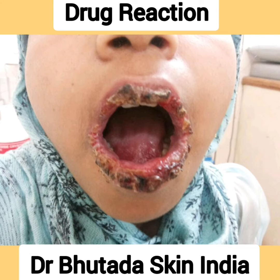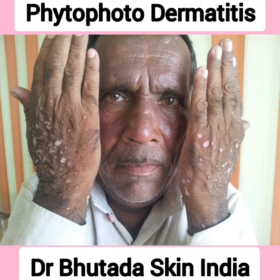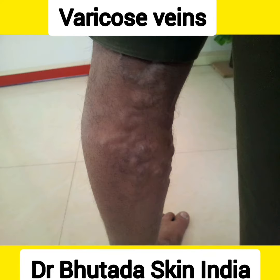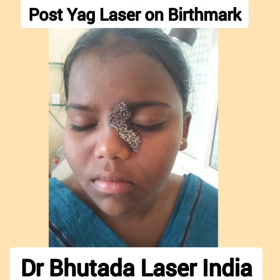This is the patient of drug reaction — you can see the oral cavity is involved. This is a patient of vitiligo — white patches. This is a patient of phytophotodermatitis on the face. This is a patient of varicose vein — you can see the varicosity of the vein. This is a patient of oral lichen planus — violaceous lesion in the mucosal area.